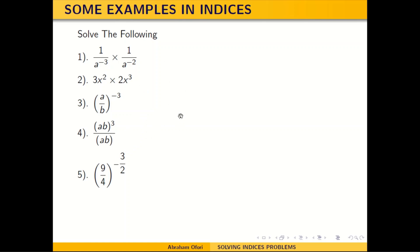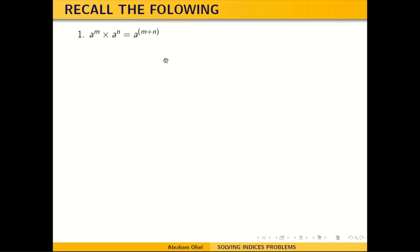Before we solve all these, we are supposed to recall some rules, identities, and properties that we covered in our previous video. So recall the following: if you have two indices multiplying and the bases are the same, you take one of the bases and add the powers. When they are dividing, this is how you go about it.